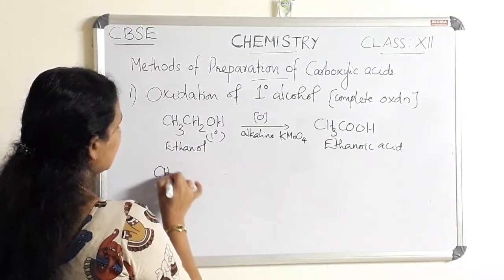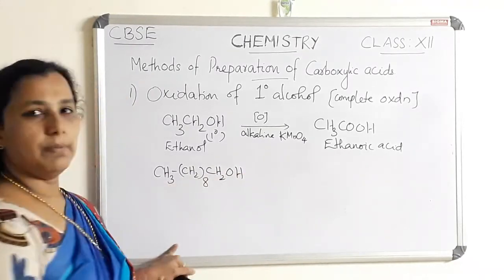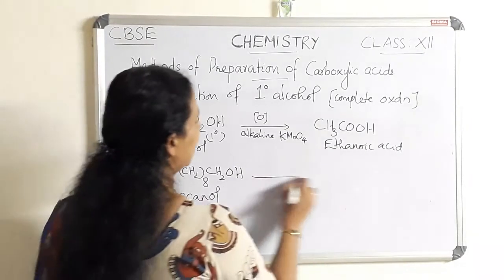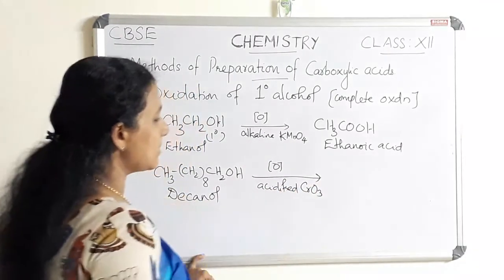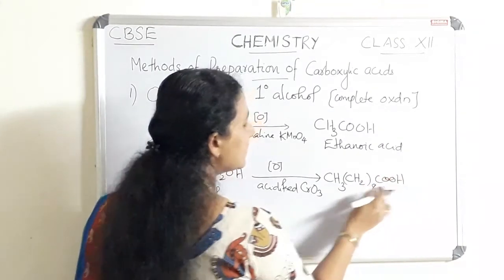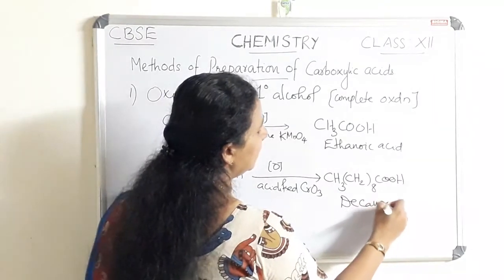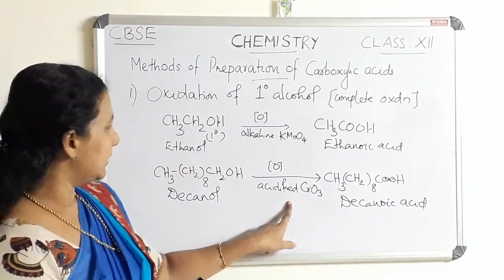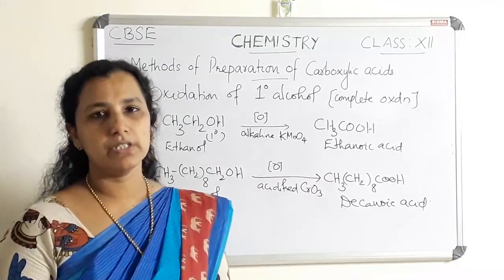Another example: decanol (C10 primary alcohol). This on oxidation in the presence of acidified CrO3 (chromium trioxide) gives the corresponding acid — decanoic acid. The corresponding acid contains the same number of carbon atoms as the alcohol. So decanol is converted to decanoic acid in the presence of a strong oxidizing agent. This is the first method of preparation of carboxylic acid: oxidation of primary alcohols gives the corresponding carboxylic acid.